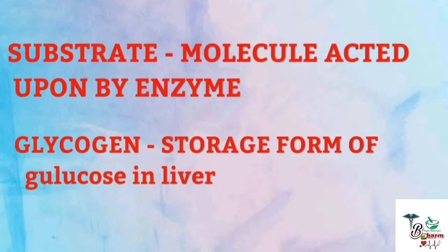First, you have to be familiar with the terms. A molecule is acted upon by an enzyme. There is a substrate and an end product. Glycogenesis is a storage form. Most glycogen is stored in the liver.